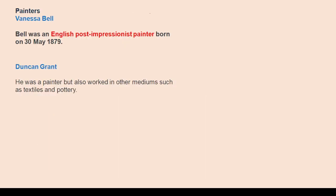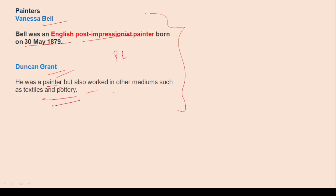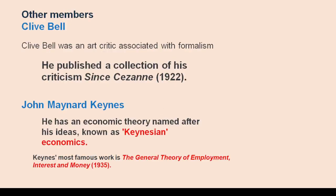Now for the painters. First is Vanessa Bell, who was an English post-impressionist painter, born on 30 May 1879. Duncan Grant was a painter who also worked in other mediums such as textiles and pottery. A question was asked in competitive exams where a group of painters were given and you had to identify who was not a painter, so you should know all members and their roles.